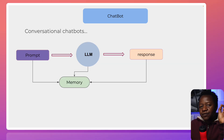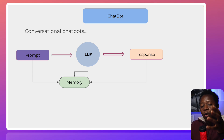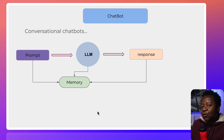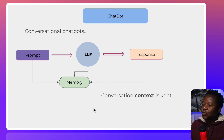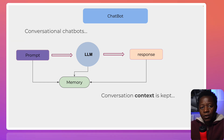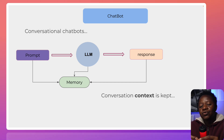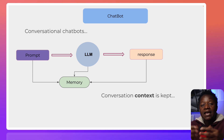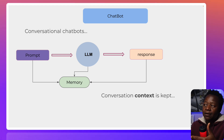For this back-and-forth to happen, we have to enhance what we had before — it's not just a simple Q&A system. In order for this back and forth to happen as you chat with the bot, there should be some sort of context that is kept. This context is what we call memory. Memory allows us to conserve and keep the context of what's happening. For example, if I type 'my name is Paolo' and later ask 'what is my name?', the chatbot needs that memory to answer correctly — otherwise it won't know who Paolo is.